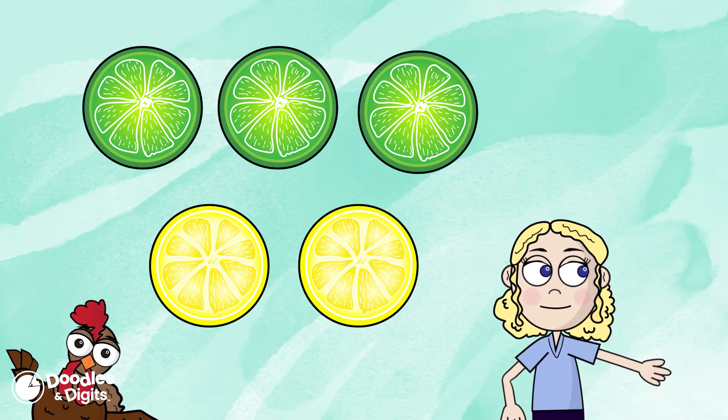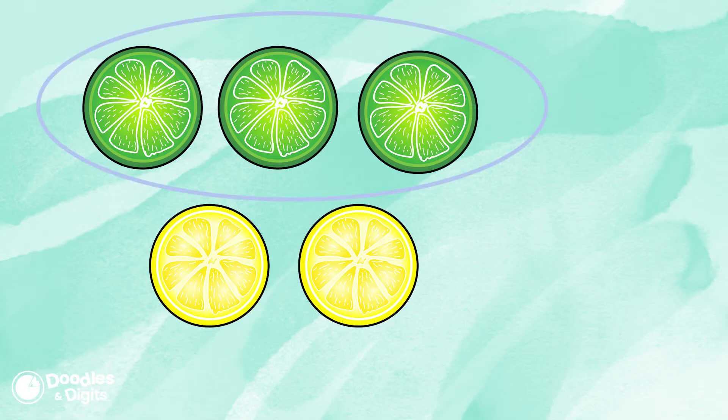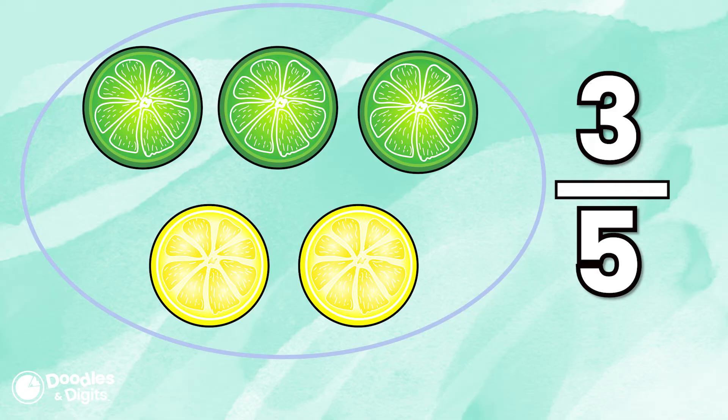What do you notice? There's three limes. So, in this group, three out of the entire group which has five are limes.